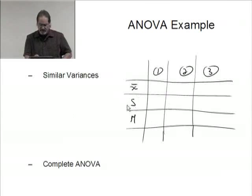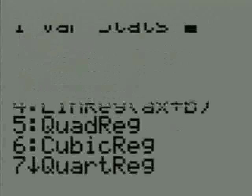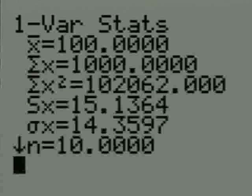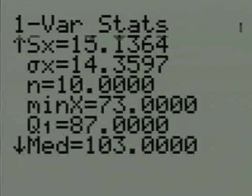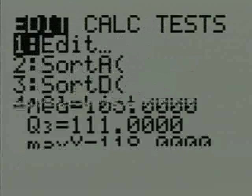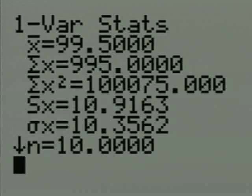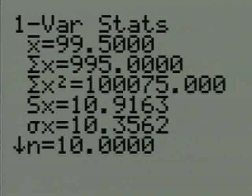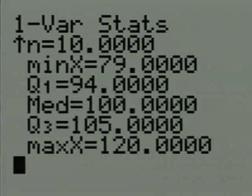In terms of addressing similar variances, it's actually standard deviations that I'm going to be looking at. Let's go back to the calculator: stat, calc, one variable statistics for L1. This had an average of 100, the standard deviation was 15.1364, and I'm going to go down and get the median, which is 103. Repeat this for L2: the mean was 99.5, standard deviation is 10.9163, and the median was 100.